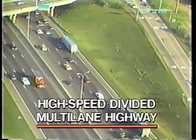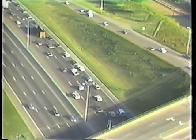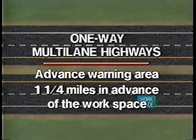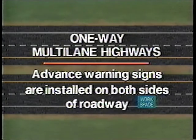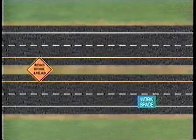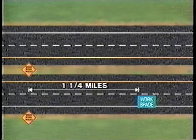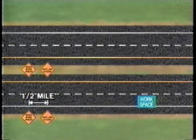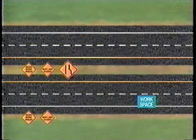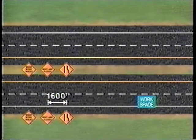The next example is on a high-speed divided multi-lane highway where the work requires the right lane to be closed. The first element installed is the advance warning area approximately one and a quarter miles in advance of the workspace. Unlike previous examples, for one-way multi-lane roadways the advance signs are generally installed on both the left and right sides of the roadway. The two road work ahead signs are placed one and a quarter miles before the workspace, followed by two right lane closed signs one half mile from the first signs, then a pair of lane reduction transition signs 1,600 feet from the right lane closed signs.